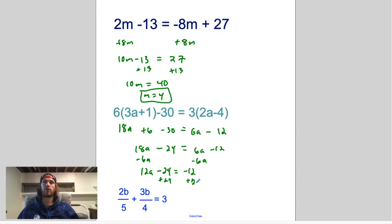Minus 6, which will give us 12a minus 24 equals negative 12 because those are going to cancel. Add 24, add 24, and you will get 12a equals 12. And a equals 1.